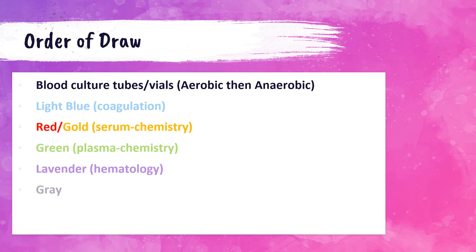So what is the order of draw? The first specimens that need to be drawn are the blood culture vials or bottles — most specifically, the aerobic bottle needs to be drawn before the anaerobic bottle. Next is the light blue top, then red and gold tops, followed by green tops, then lavender and pink tubes, and finally gray top tubes.